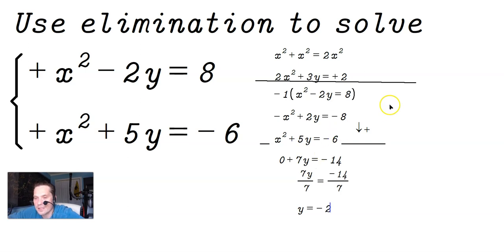Once you know y is equal to negative 2, then you just solve for the corresponding value of x. So using one of these equations, for example, let's use the top equation. We're going to have x squared minus 2 times the value of y, which is negative 2. This is equal to 8. So this y, I'm just replacing with negative 2.